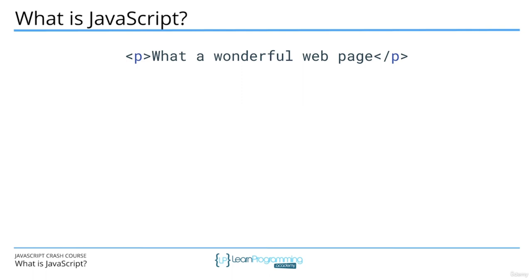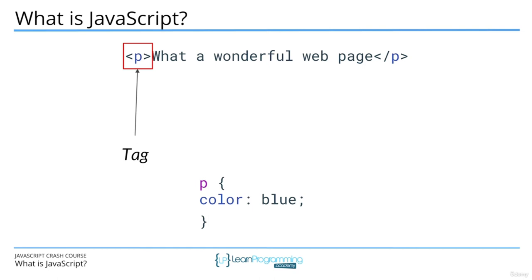Looking at a quick example: a full HTML element defines an element on a page, where 'p' is a tag and 'what a wonderful web page' is the content. To add styling, you can write CSS specifying that the 'p' tag should apply blue color. Here 'p' is a selector, 'color' is a property, and 'blue' is a value.